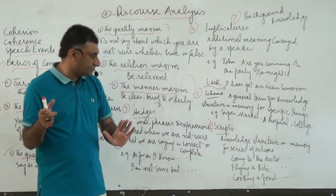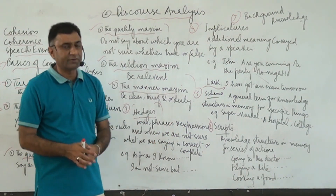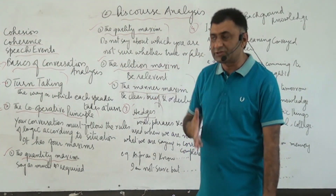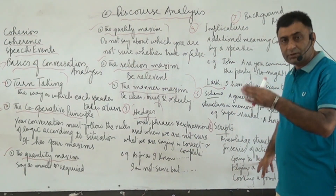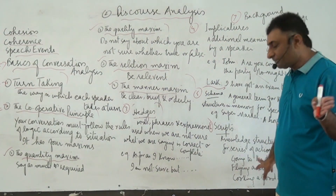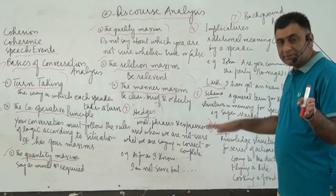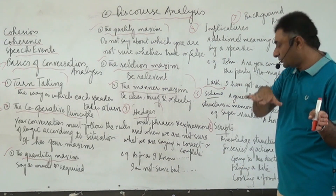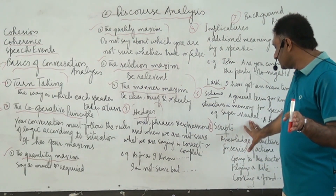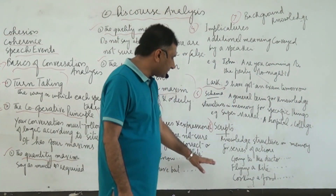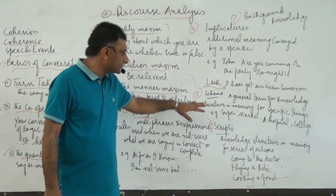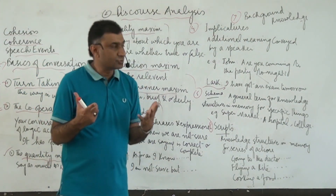Scripts refer to knowledge structure and memory for a series of actions. For example, going to the doctor — what happens step by step. Or flying a kite, or cooking food — these are works in progress where a series of actions takes place. Scripts are about knowledge which is part of memory for a series of actions. The difference from schema is that schema is about general knowledge of specific things, while scripts are about series of actions.